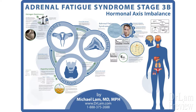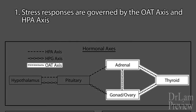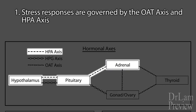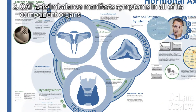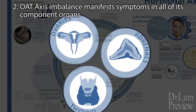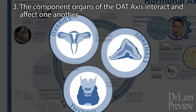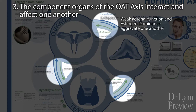Let's go through the following key points. First, the body's hormonal organs are tied closely together via various axes. The lesser-known OAT axis, as well as the better-known HPA axis, regulate the stress system. Number two, when the OAT axis is disrupted, there is an imbalance of hormones leading to symptoms of estrogen dominance, low energy from adrenal involvement, and hypothyroidism. Number three, each portion of the OAT axis affects the others — imbalances in one will worsen the others. For example, estrogen dominance will worsen adrenal function, which in turn will aggravate estrogen dominance.